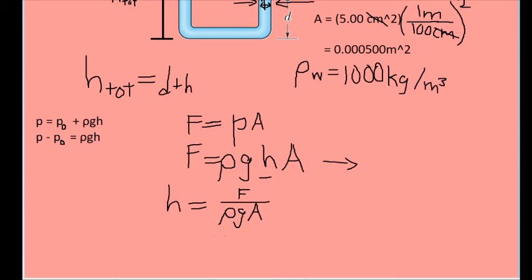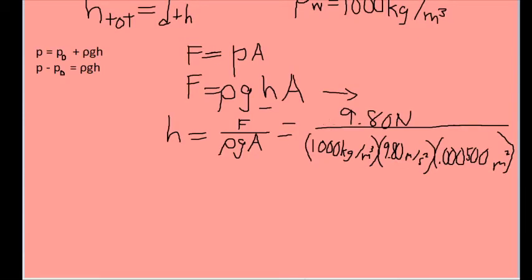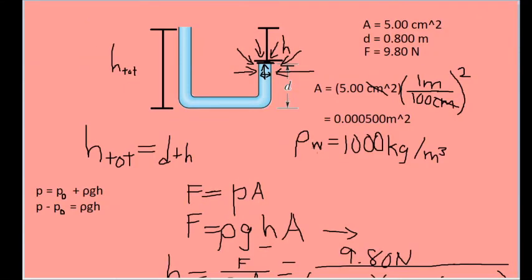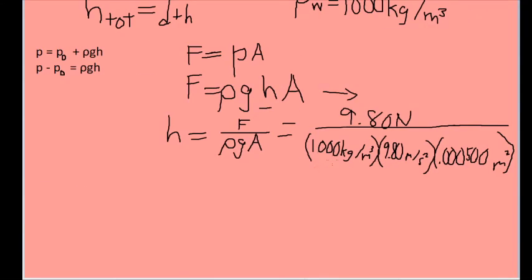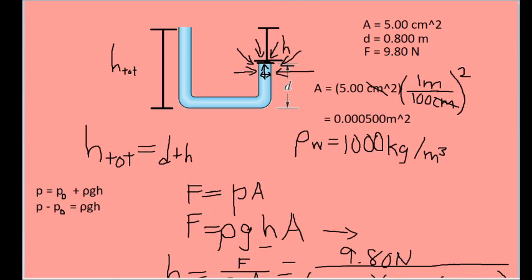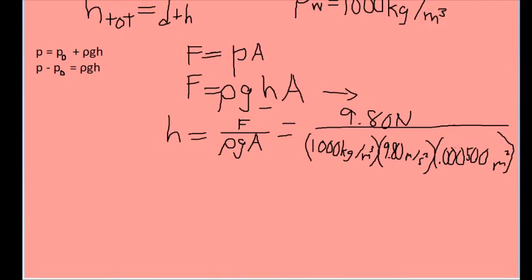Let's now substitute in our values. So of course it's 9.80 newtons for the force. I already defined a thousand kilograms per cubic meter for the density of the water. The acceleration due to gravity 9.80 meters per second squared. And the surface area that this force is acting on is acting on one side of the seal or which is going to be the same as the cross-sectional area of the tube. So I use .000500 squared meters for the area.